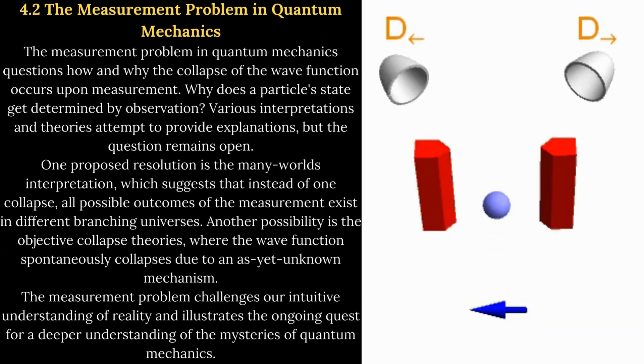4.2 The Measurement Problem in Quantum Mechanics. The measurement problem in quantum mechanics questions how and why the collapse of the wave function occurs upon measurement. Why does a particle's state get determined by observation?